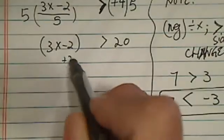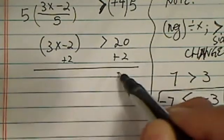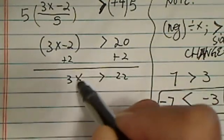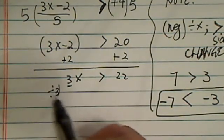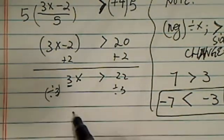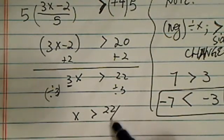From here, let's keep on isolating. This is 22 and 3x. Lucky for us, we have a positive 3 here, so we're going to divide by 3 on both sides. We'll have x is bigger than 22 over 3.